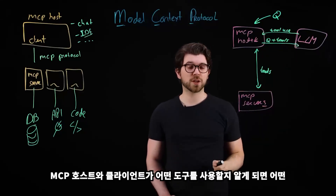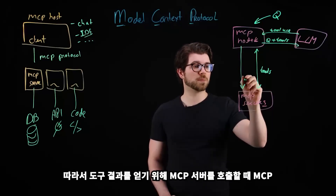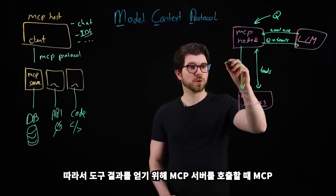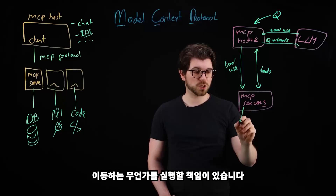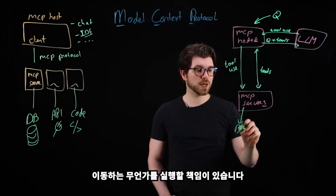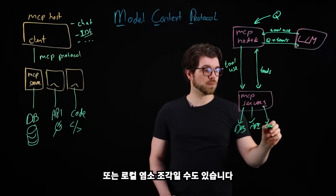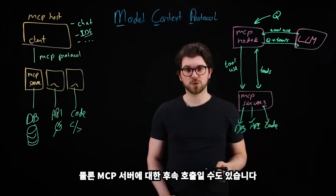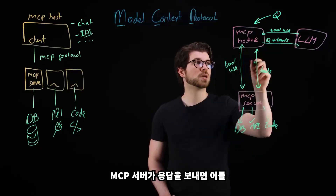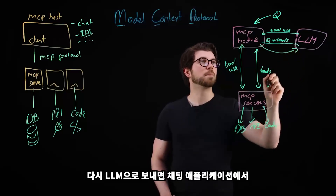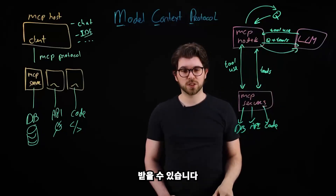Once the MCP host and client knows which tools to use, it knows which MCP servers to call. When it calls the MCP server to get a tool result, the server is responsible for executing something that goes to a database, an API, or a local piece of code. There could also be subsequent calls to MCP servers. The MCP server will reply with a response, which you send back to the LLM, and finally you get your answer based on the question asked in the chat application.